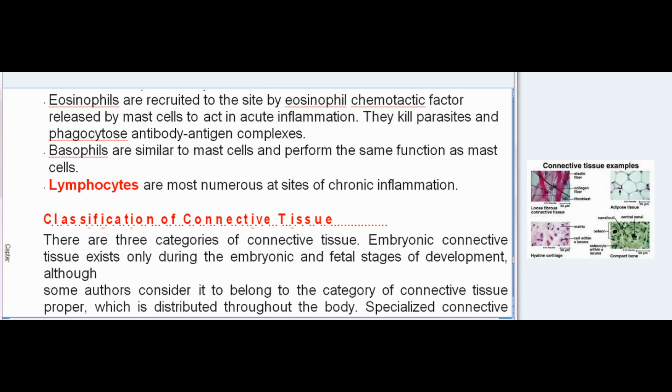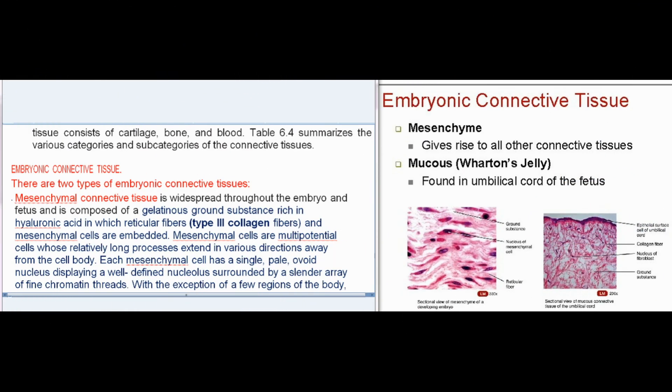There are three categories of connective tissue. Embryonic connective tissue exists only during embryonic and fetal stages of development, though some authors consider it to belong to connective tissue proper. Specialized connective tissue consists of cartilage, bone, and blood. Table 6.4 summarizes the various categories and subcategories of connective tissues.